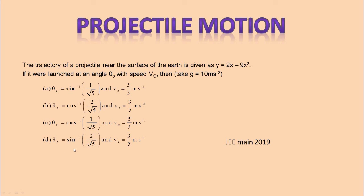Option D: θ₀ is equal to sine inverse 2 by root 5 and v₀ is equal to 3 by 5 meter per second. This question was asked in JEE Main 2019 in one of the papers.